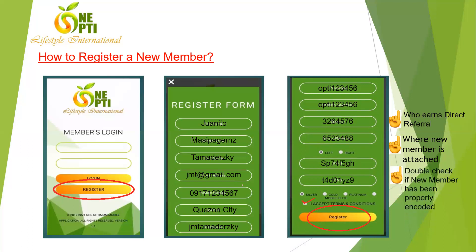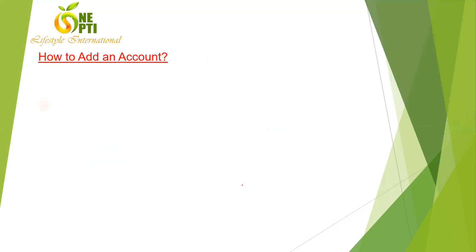Before clicking Register, double-check that the new member's details are correctly encoded — especially the name, sponsor ID number, and binary placement ID number. Once done, forward the username and password to your new member so they can log in. Share this tutorial video so they know how to use the mobile app, and teach them how to download it and log in.